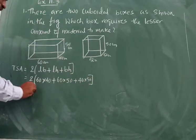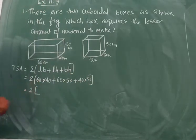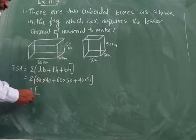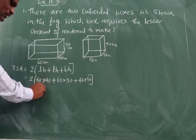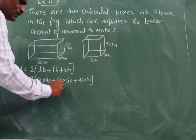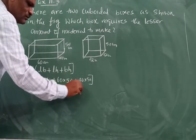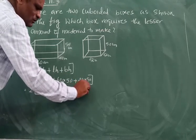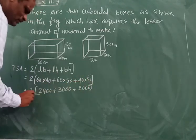So now let us simplify this one. 2 into, simplify inside the bracket. So 60 into 40, 2,400. Plus 60 into 50, 3,000. Then 40 into 50, 2,000. So what is the sum of this? 2,400.